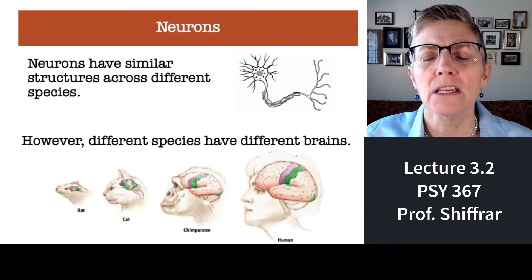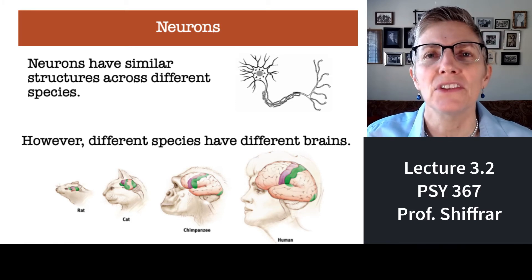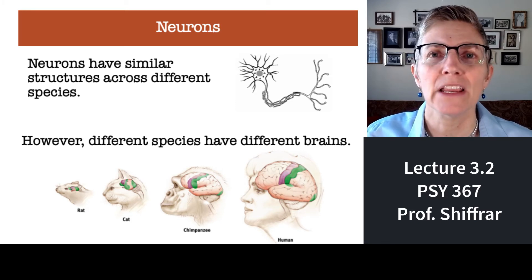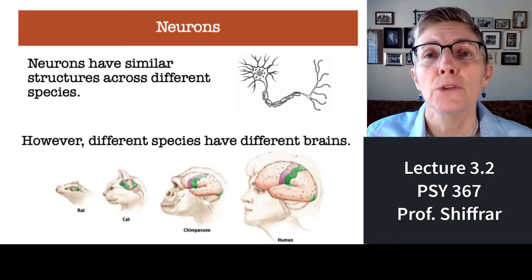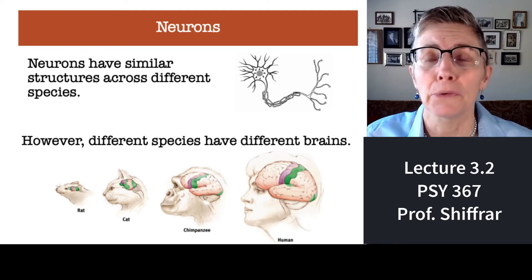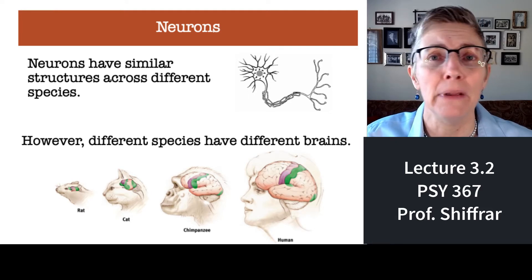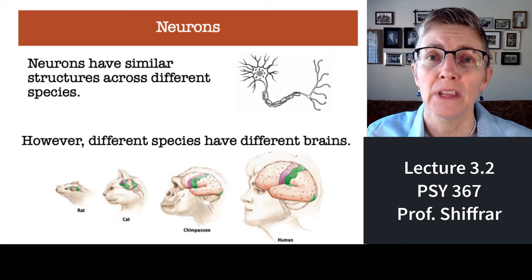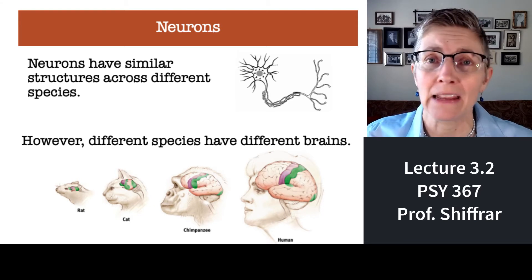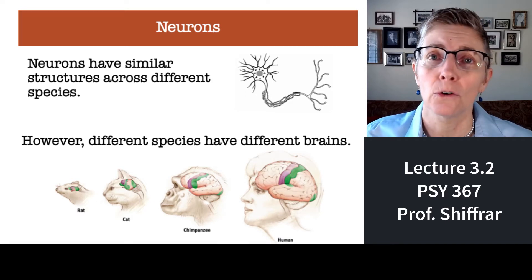I use the analogy of a building block because it turns out that the same neurons, the same structures, are used to build very different brains. The brain of a rat, a rabbit, a cat, a dog, a bear, and a human — we all have the same neurons. The only thing that changes is how those neurons are put together. In the same way that you could use a brick to build an outhouse or a mansion, you can use the same neurons to build a rat brain or a human brain.